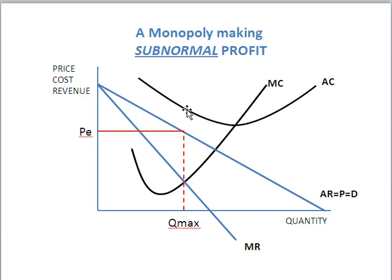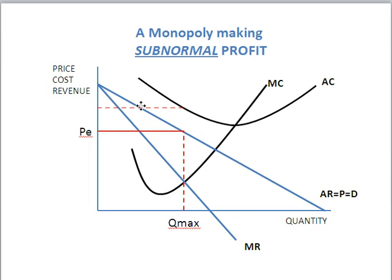You will notice that our cost now — the point on the average cost curve that coincides with that vertical line — is going to be higher than the price. It looks about there. Let's label that correctly; we've been labeling that as CE. So that's our cost.